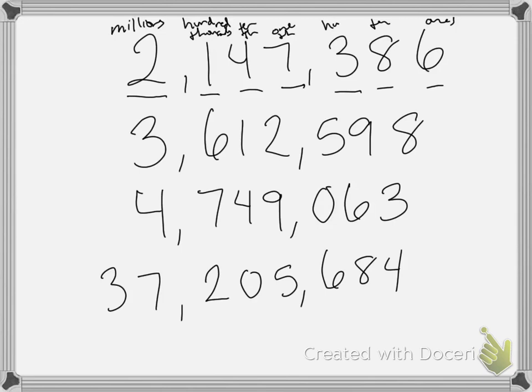So let's read the next one. This one says it's three million, six hundred, twelve thousand, five hundred, ninety-eight.